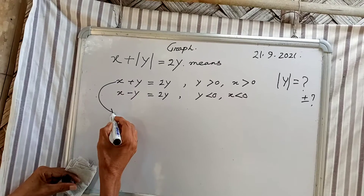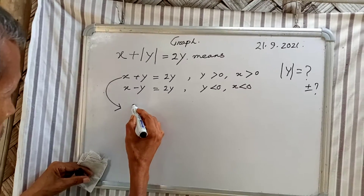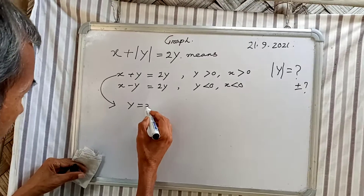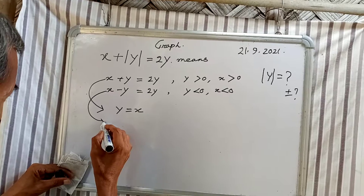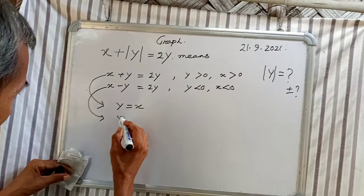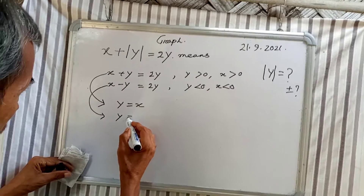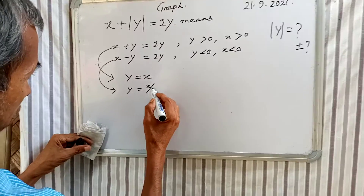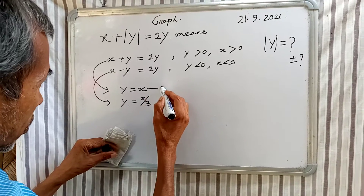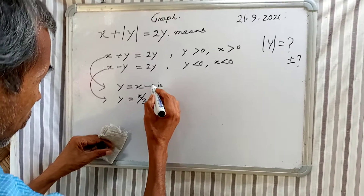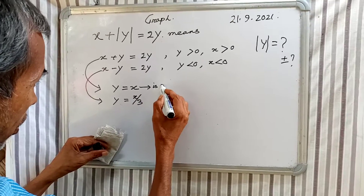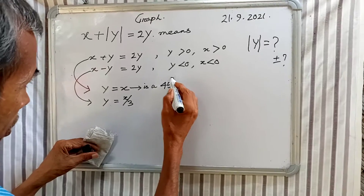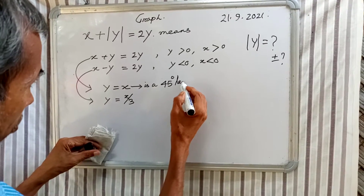Now it becomes y equal to x, and it becomes y equal to x by 3. The line y equal to x is a 45 degree line.